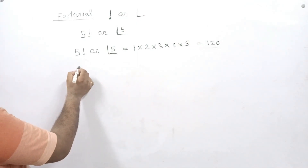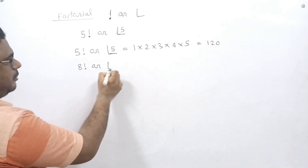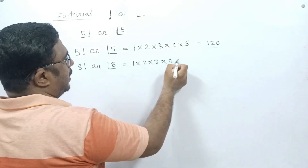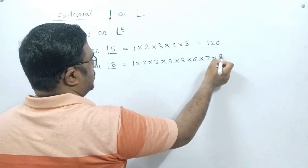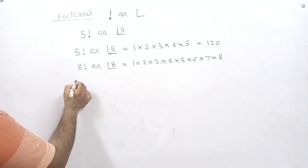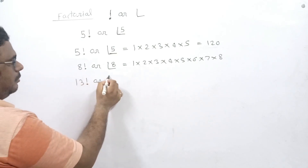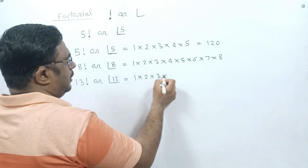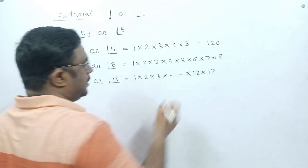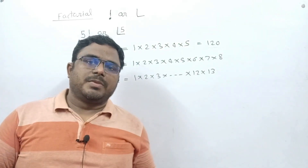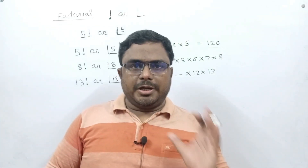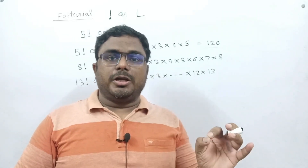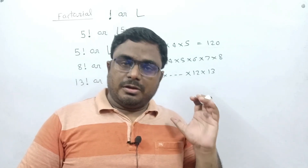Suppose I want to say 8 factorial or factorial 8, then it will be 1 × 2 × 3 × 4 × 5 × 6 × 7 × 8. Similarly, if I want to say 13 factorial, then I will write down 1, 2, 3 and up to 12 and then 13. So basically, the factorial sign simply multiplies the first n natural numbers. If you want to say 13 factorial, it means we will have to multiply the first 13 natural numbers.